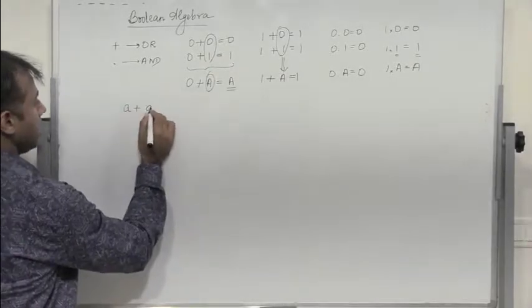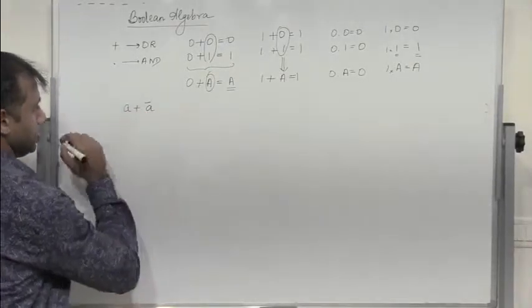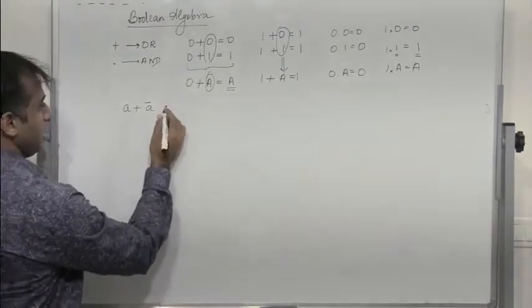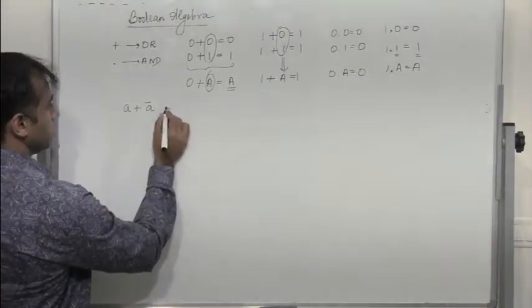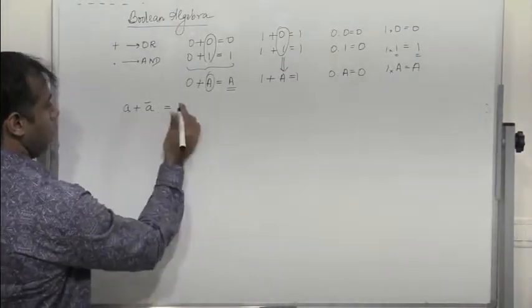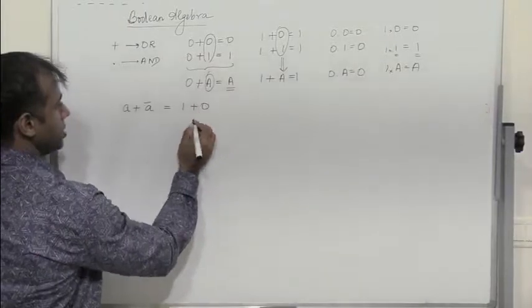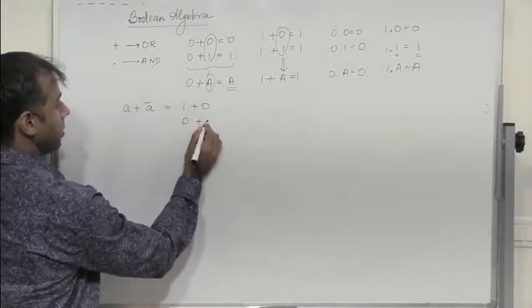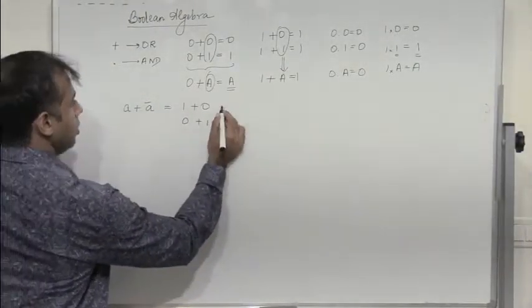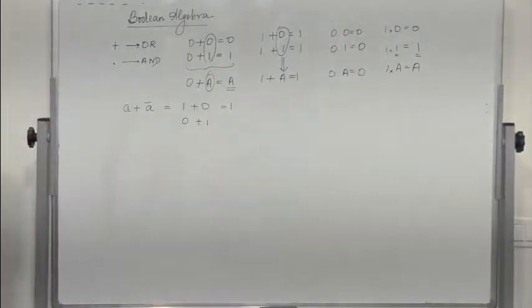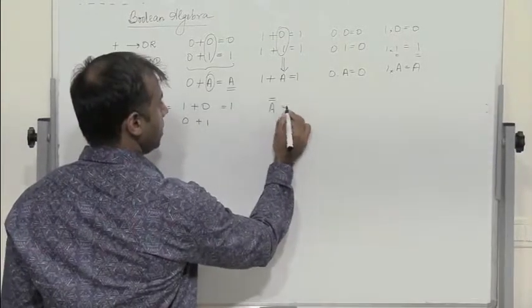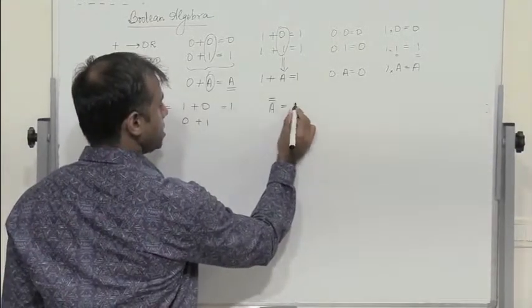Next: A plus A complement. If A is 1, A complement is 0. If A is 0, A complement is 1. So this is always equal to 1 — A plus A complement is always equal to 1. And A double complement is always A.